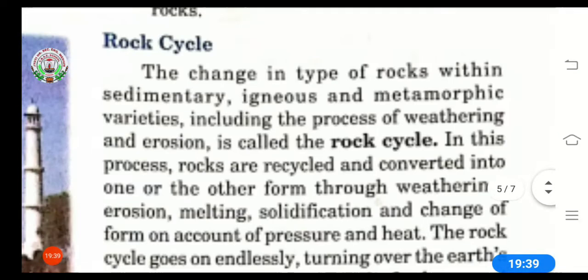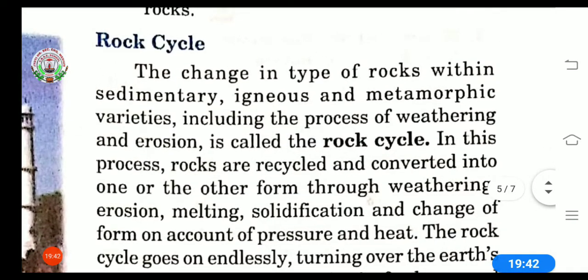Rock cycle. Now the change in type of rocks within sedimentary, igneous and metamorphic varieties including the process of weathering and erosion is called rock cycle. There are three kinds of rocks: first is igneous rock, second sedimentary rock and third metamorphic rock. So when there is change within these three types of rocks because of the process of weathering or erosion that is called rock cycle.